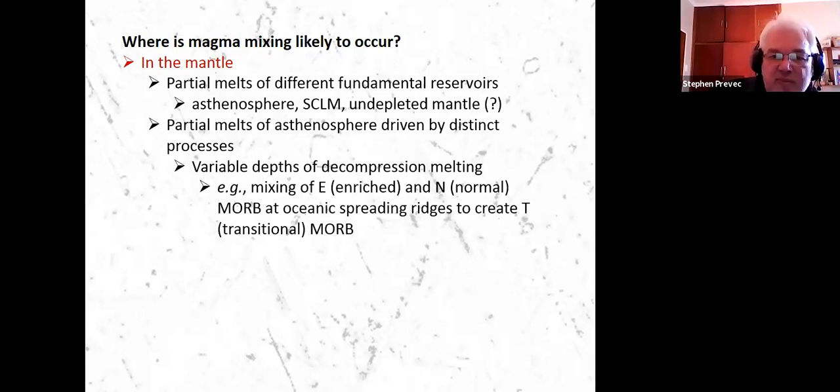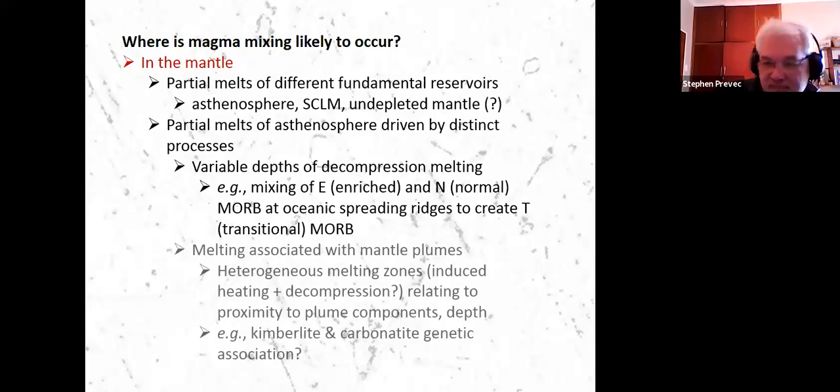So we can melt the same materials in different ways, which will produce different types of partial melt product from them. For example, the asthenospheric mantle can be melted by decompression melting, as we see at mid-ocean ridges, for example. And we'll have a quick look at examples of this, at least in geochemical plots. And then we can have melting of asthenosphere induced by heating from mantle plume emplacement into the upper asthenosphere. And depending on where you are relative to the mantle plume, there are different thermal domains, which will have different partial melting outcomes.